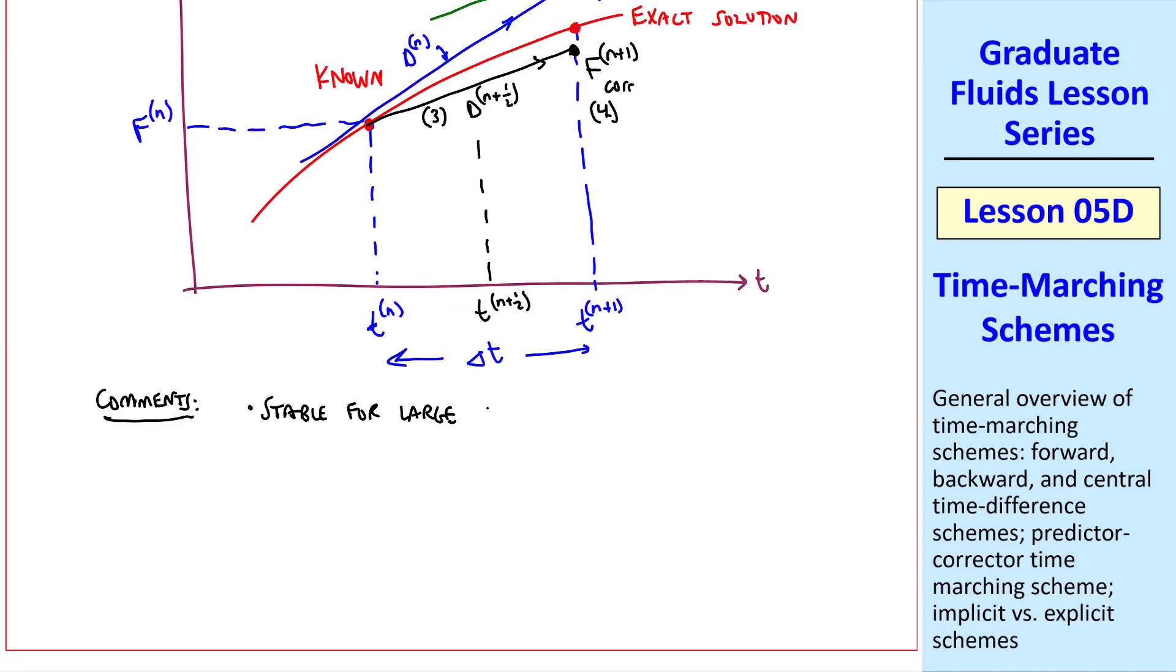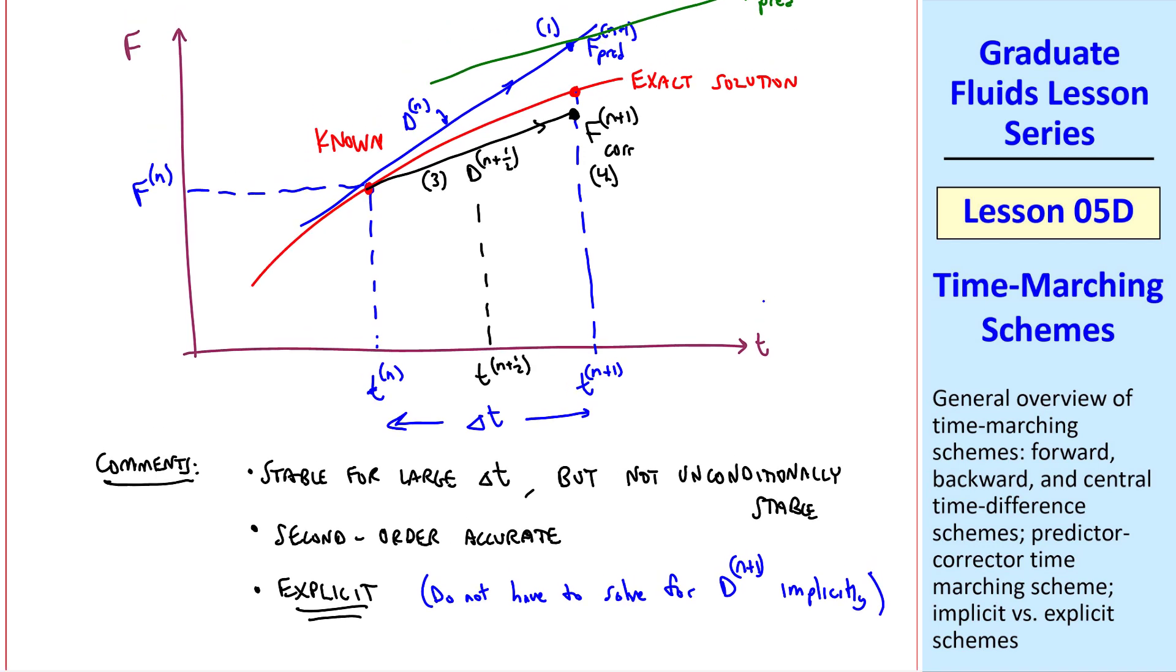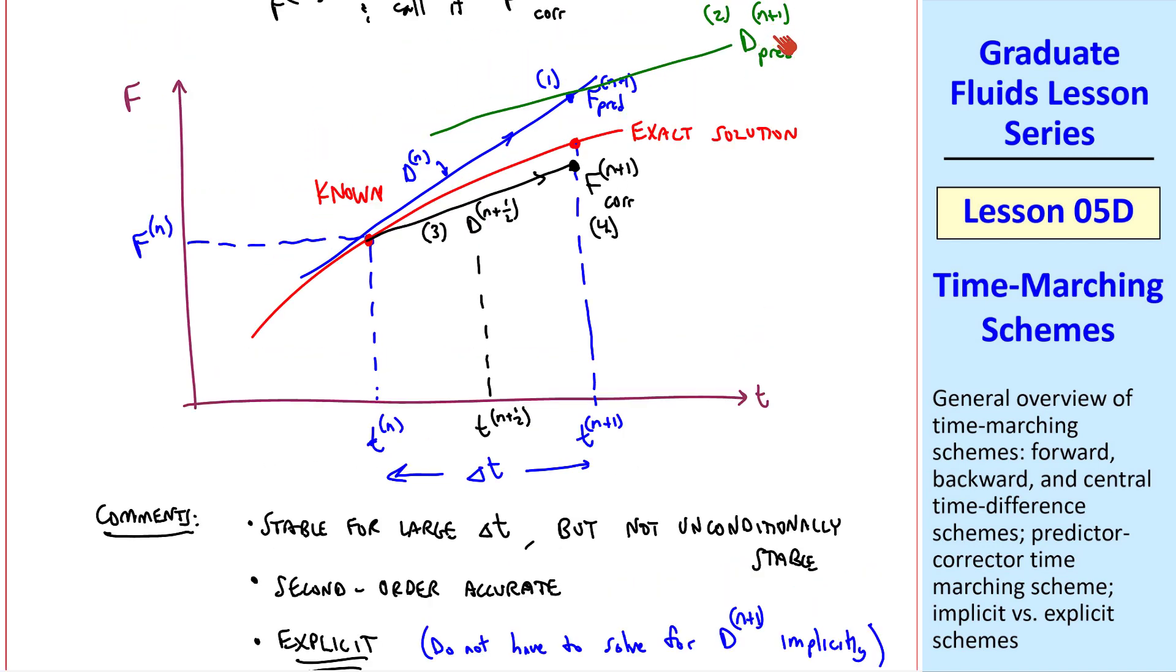Again, some comments. It's stable for large delta t, but like the central difference scheme, it's not unconditionally stable. It can still go unstable if delta t is real large. It turns out to be second order accurate, and the big advantage of this one is that it's explicit. We do not have to solve for dn plus 1 implicitly. Instead, we predicted dn plus 1 based on our predicted fn plus 1. All of that is explicit.